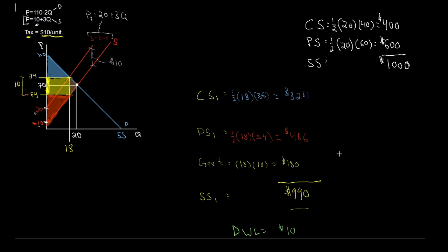Who are the winners and losers? Consumers used to have $400, now they get $324 — they've lost. Producers used to get $600, now get $486 — they've lost. Government used to get nothing, now collects $180 — they're winning. Society overall: used to get $1,000, now only $990 — society loses. This is why taxes are so universally unpopular — everybody loses except for the government who collects their share.